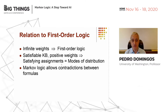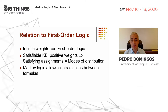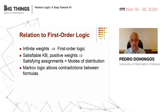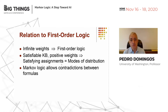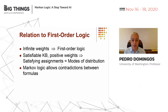Even more importantly, the knowledge base does not have to be satisfiable. In logic, if there's a contradiction in the knowledge base, then anything follows and things fall apart, which makes it very hard to build large knowledge bases or combine knowledge from multiple sources. In Markov logic, there is no problem at all with contradictions — if there's a contradiction, you just add up the weights on either side and you get the resulting probability.